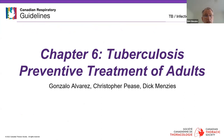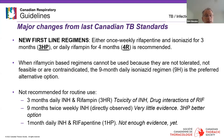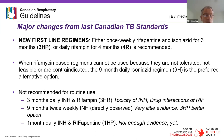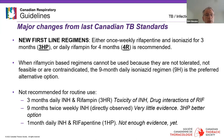One of the major changes concerns TB preventive therapy, or TPT. Most importantly, 3HP — once-weekly rifapentine and isoniazid — is now recommended as the first-line regimen; it used to be considered an alternative. Daily rifampin for four months is also recommended. The choice between them depends on the setting and the population. Both should be available across Canada, but access to rifapentine is not easy and there are important access issues.